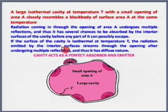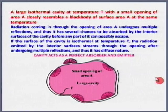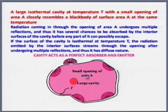Whatever radiation is entering into the cavity, it has to be absorbed if the cavity is to be a perfect absorber. What happens is: the radiation entering undergoes multiple reflections and gets absorbed completely — nothing is lost. So the cavity can be visualized as a perfect black body.